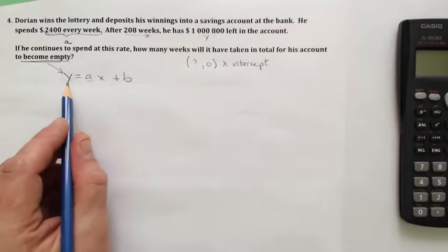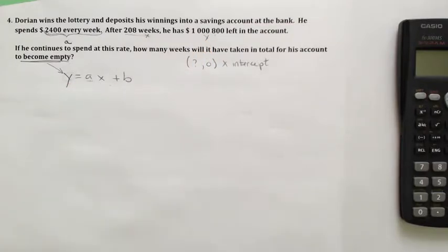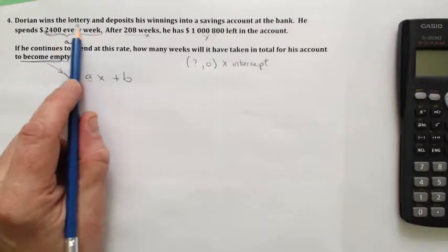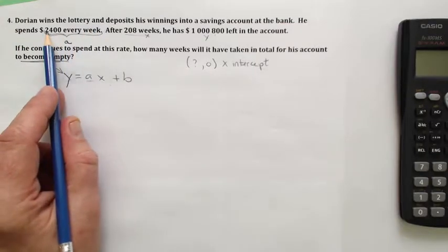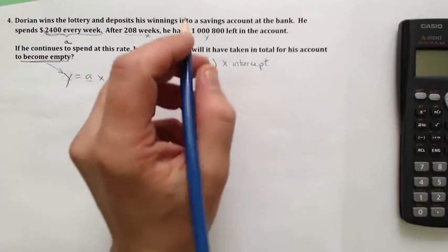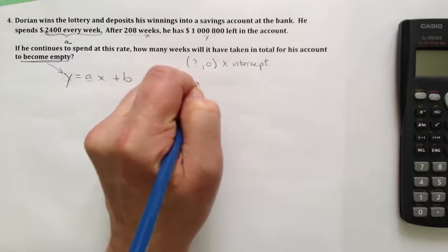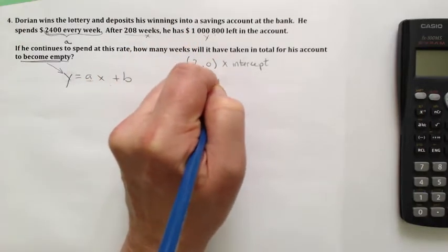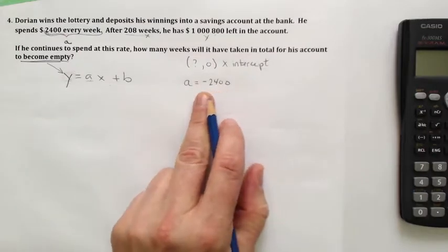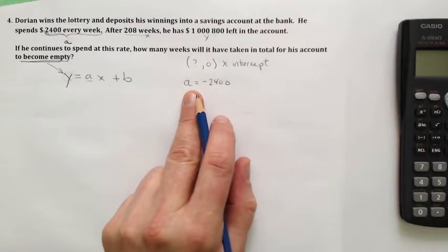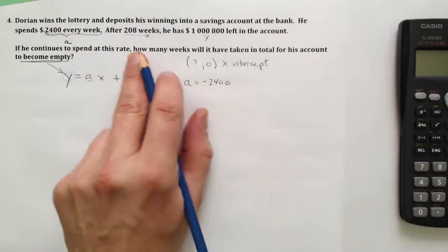So we've got our slope-intercept form: Y equals ax plus b. We know by how much his account is changing every week. It's shrinking by $2,400 a week, so we know our rate of change. Our rate of change is equal to negative $2,400. They've given us the slope or the rate of change in the equation.